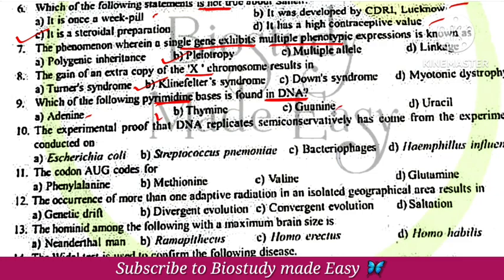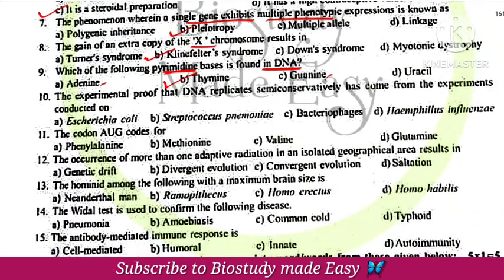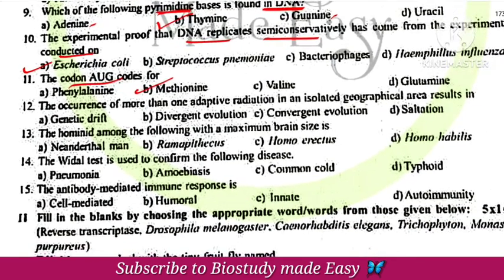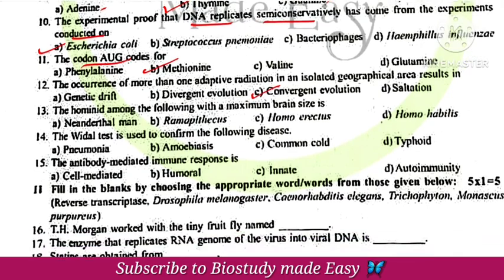Thymine is the pyrimidine found in DNA. The experimental proof that DNA replicates semi-conservatively was conducted on E. coli, option A. The codon AUG codes for methionine. The occurrence of more than one adaptive radiation in an isolated geographical area results in convergent evolution.